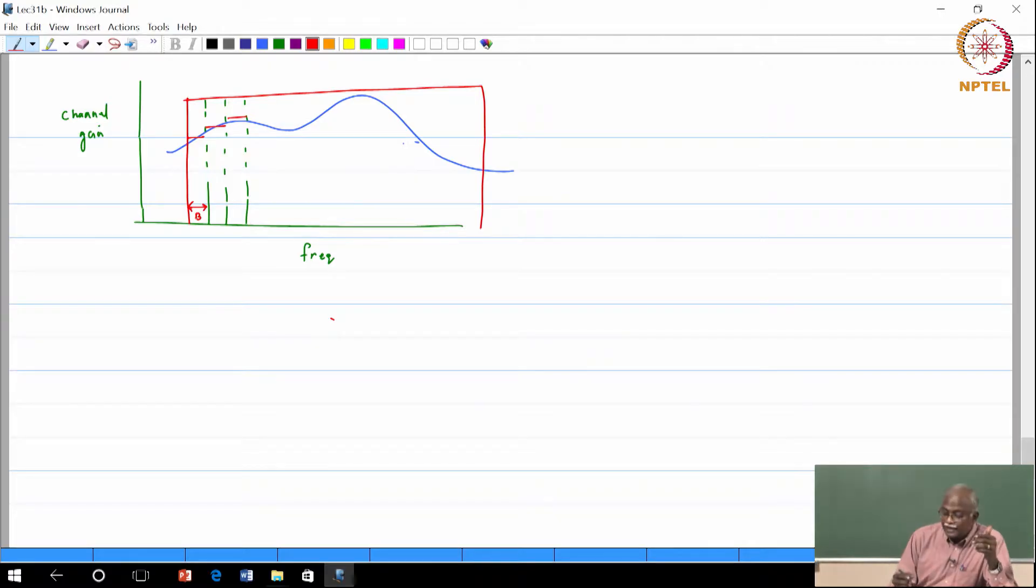So now I want to now ask the question: can you tell me what is the capacity of this wide band channel? I could not have given you an answer if it was a single wide band carrier, but now if I break them up into sub bands actually I can.